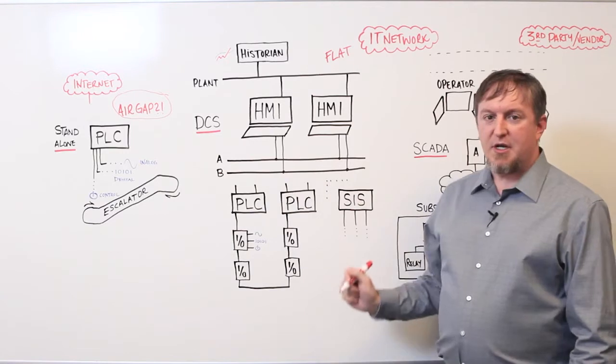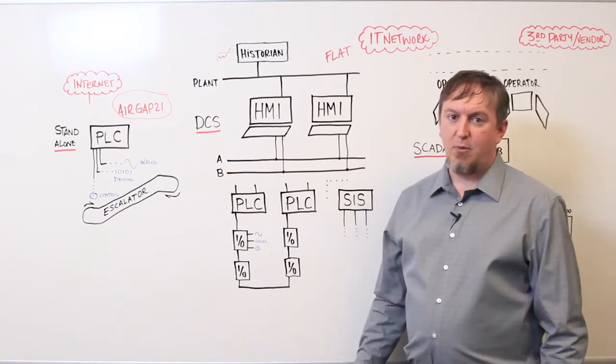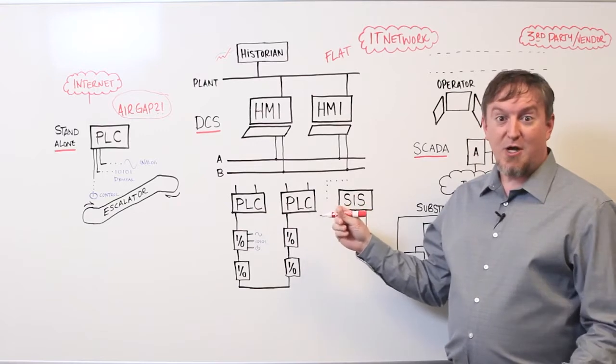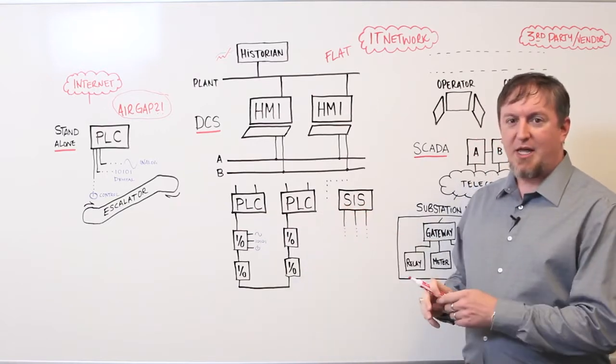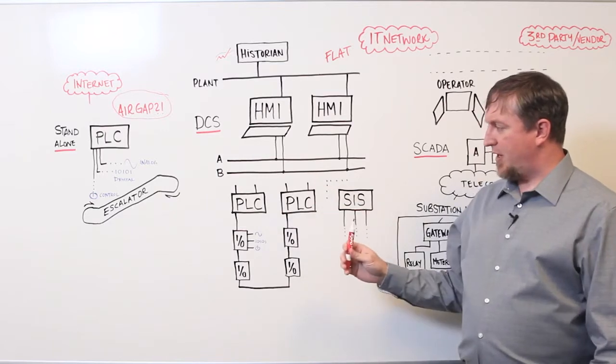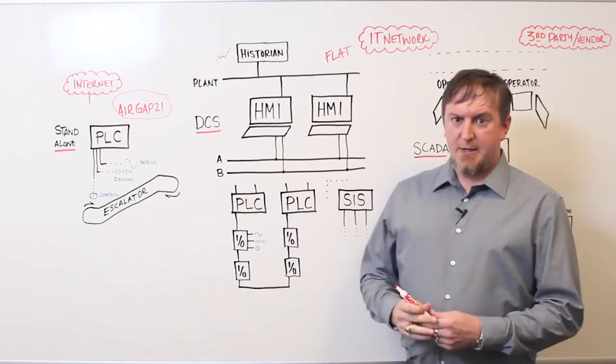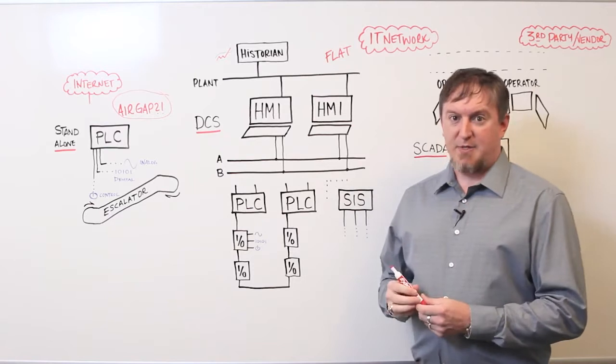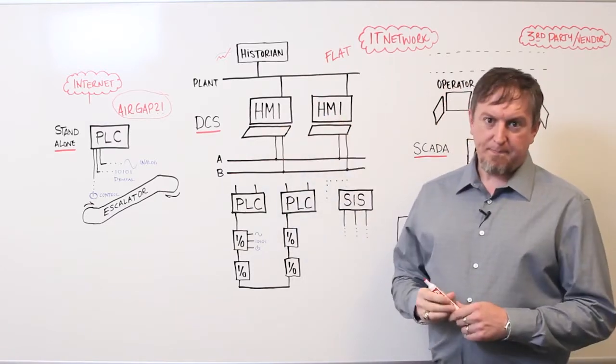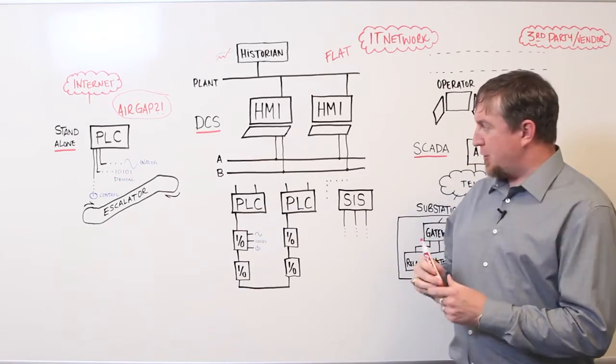Then, you have redundant control system network connectivity for additional uptime. We want to make sure that the plant and the process runs. So, if we lose one part of the network or lose one PLC, you have maximum uptime.